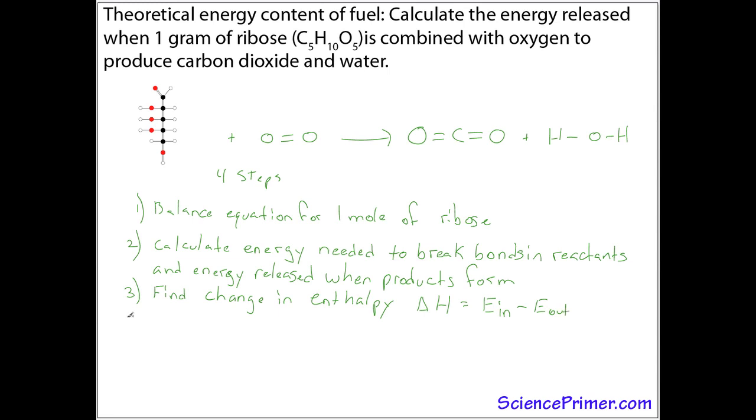Once we have delta H, we will have the answer we want in the units of kilocals per mole. Since we want the answer in kilocals per gram, because we want the answer for one gram of ribose, we then need to convert from kilocals per mole to kilocals per gram using the formula weight of ribose. So we'll have to calculate that as well.